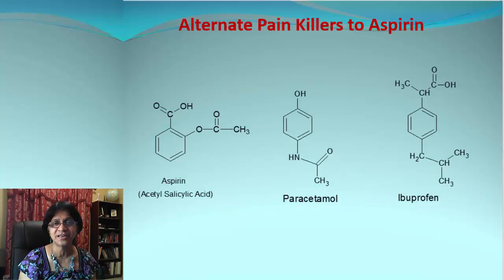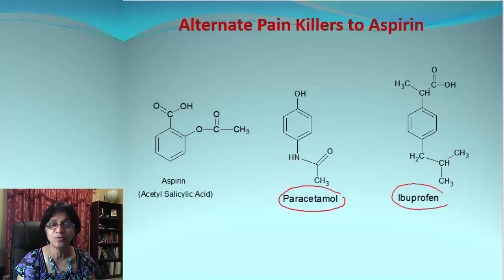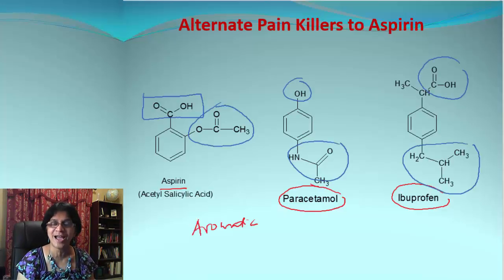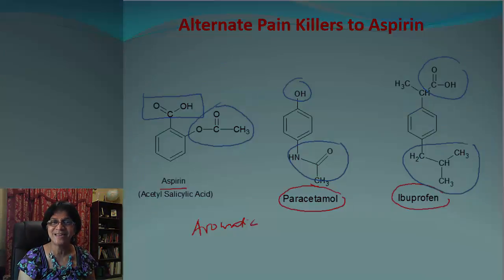Since aspirin has serious side effects, other mild analgesics are available — paracetamol and ibuprofen. If you compare the structures of aspirin, paracetamol, and ibuprofen, you see some similarity: they all have an aromatic ring, and the branches attached to the aromatic ring show some structural similarity. I hope you found useful information about aspirin and liked the video. I'll see you in the next video — until then, bye bye.